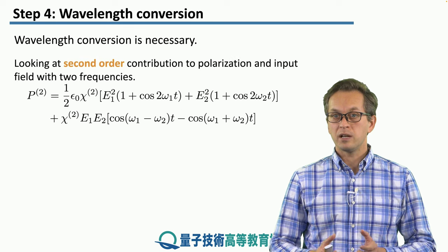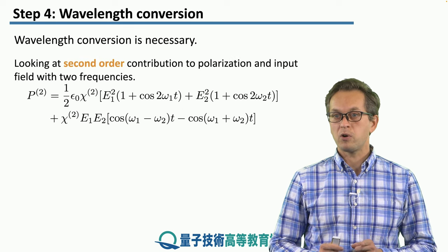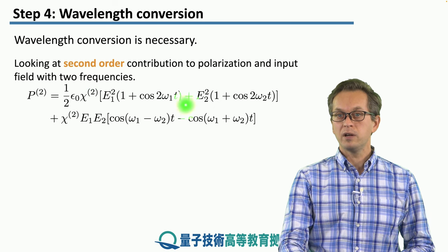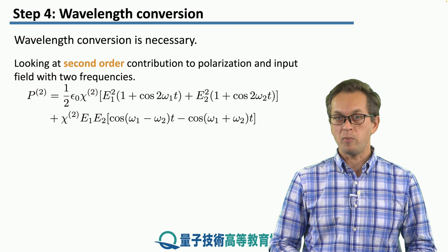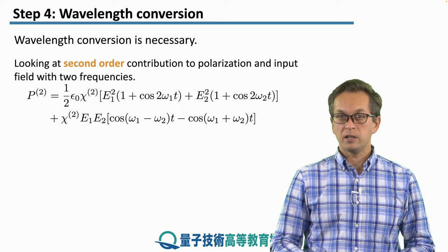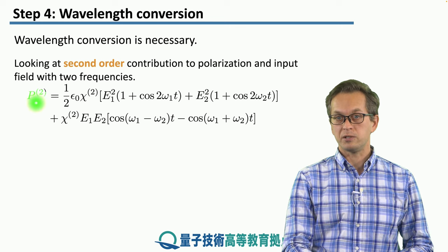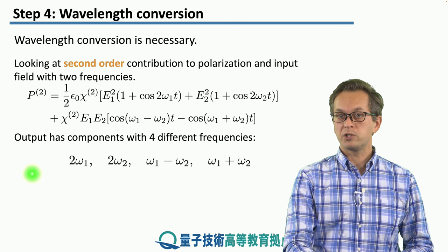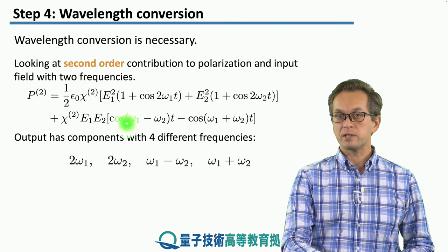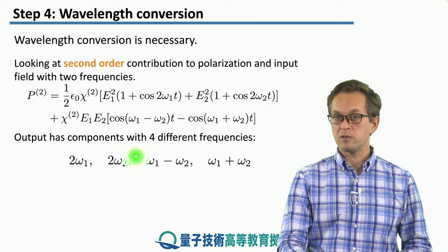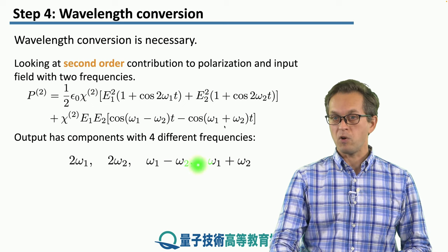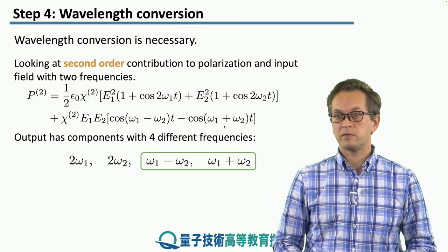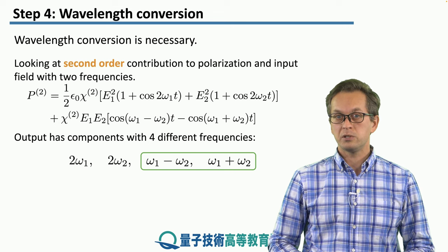So let's compute the polarization and look at the second order. Imagine that we have two coherent input fields: one has amplitude E1 and frequency omega1, while the other has amplitude E2 oscillating at frequency omega2. If we square the resultant field, we obtain the contribution to the second order of the polarization. Here we see that we have four frequency components: two components which are just double the input frequencies, and then components oscillating at the difference of the frequencies, omega1 minus omega2, as well as the sum, omega1 plus omega2. It's these last two that we are mostly interested in, and we will use them to achieve wavelength conversion.